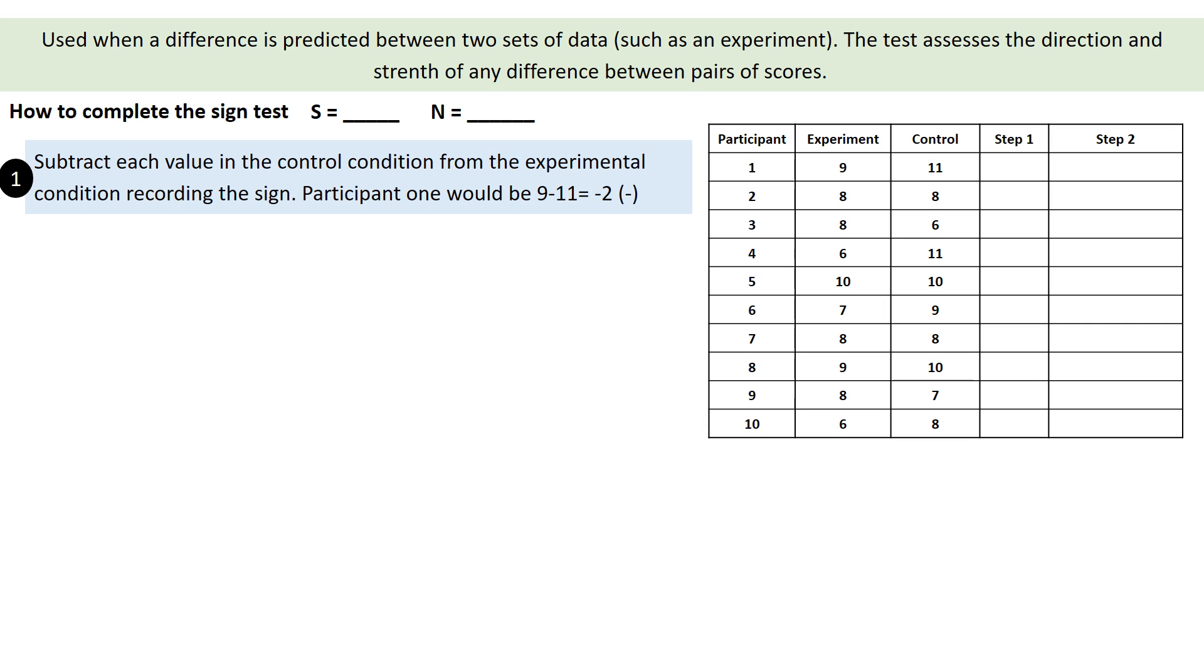So we just subtract one from the other. For example, in this situation for participant number one, we have nine minus eleven, that would equal minus two.